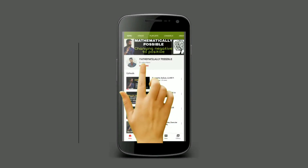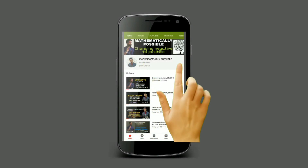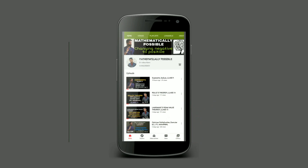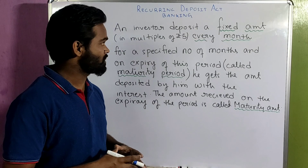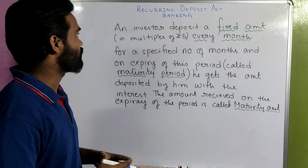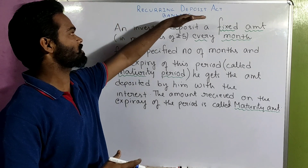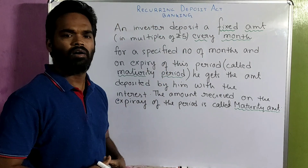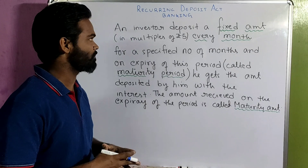Hello friends, please subscribe to our channel and press the bell icon for latest updates. Hi kids, today our topic of discussion is recurring deposit account — a very easy topic. You can easily score four marks.